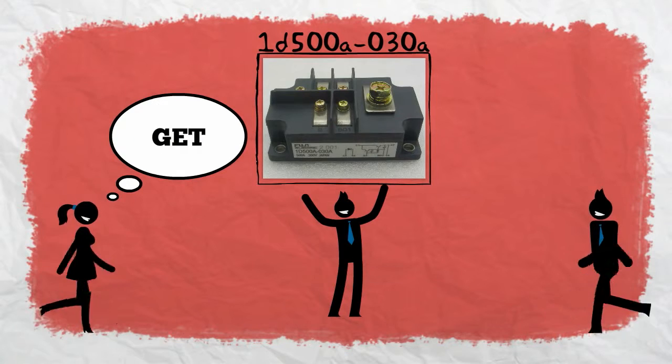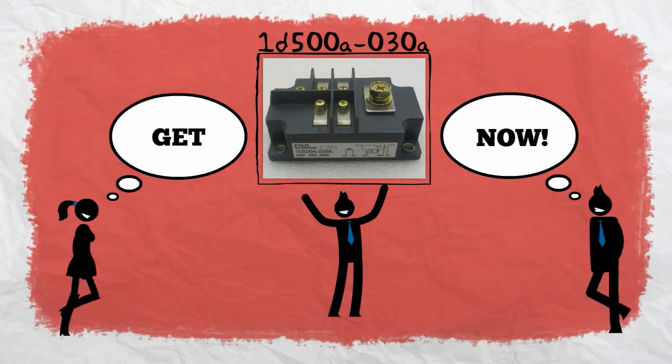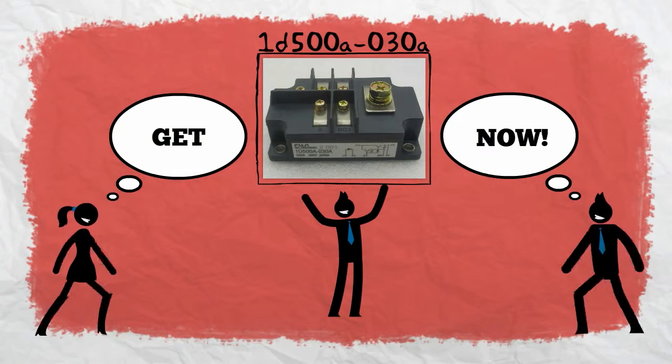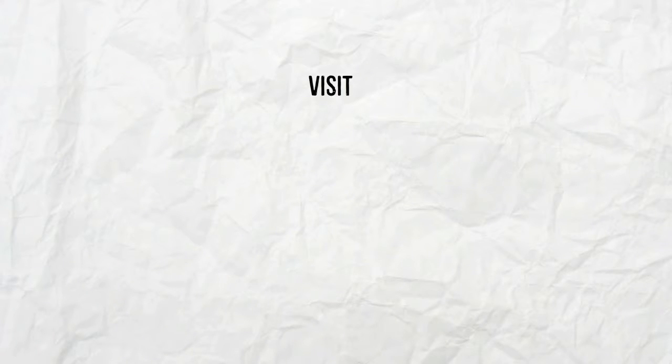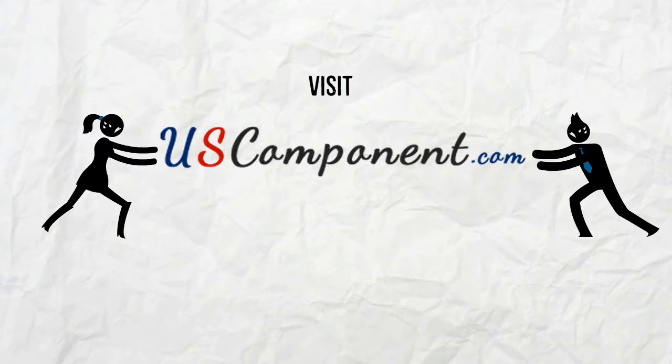1D500A030A makes an appropriate power transistor module for a DC motor to run and operate these home appliances smoothly. Visit and shop online at uscomponent.com for this amazing product and outrun your business competitors.